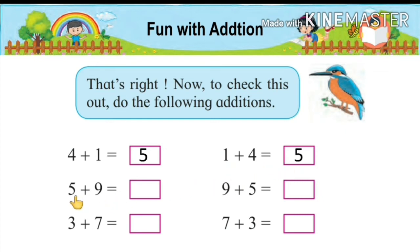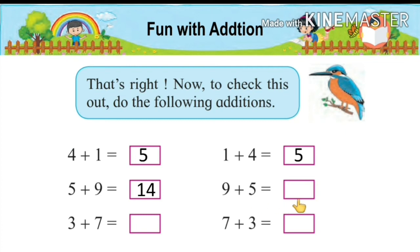Next example: 5 plus 9. If we add these two numbers, we get the answer 14. Again, here we have the first number 9, then 5. We have both additions, and the answer will be the same: 14.